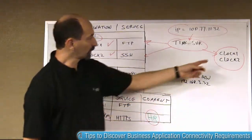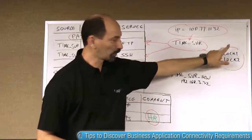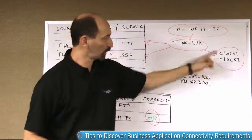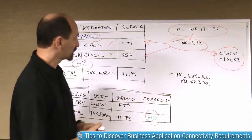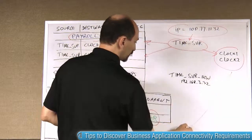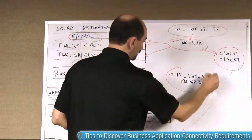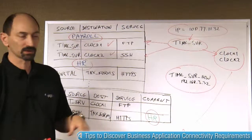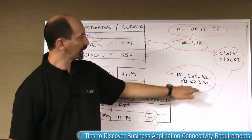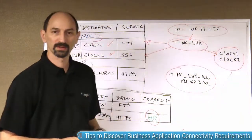Now you can go back and explore the firewall rules for those objects and see what other rules refer to those objects. And perhaps you discover some other rule somewhere else that has yet another system with a different IP address that communicates with one or two of these servers.